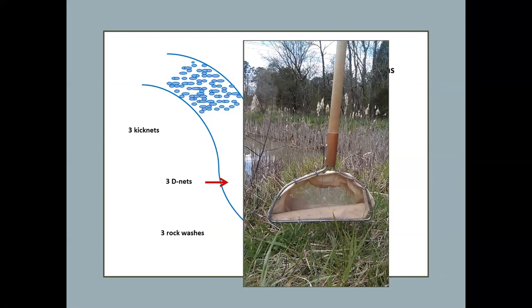Then D-nets, a similar concept. The substrate is disturbed, but this is a specific habitat. It's a depositional area on the side of the stream. There's lots of sandy, silty type materials. And that is disturbed when the net goes through it. It still picks up a lot of the finer materials that don't pass through the net that is preserved and taken back to the lab.